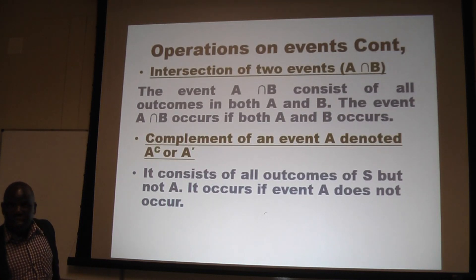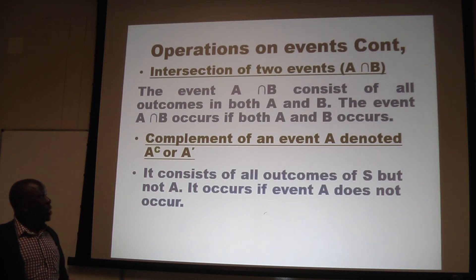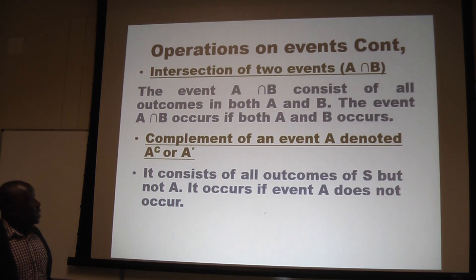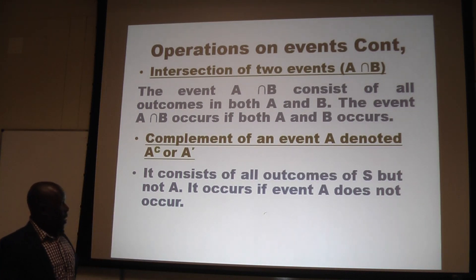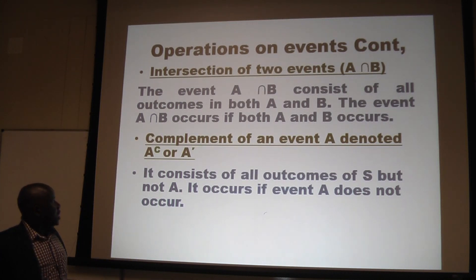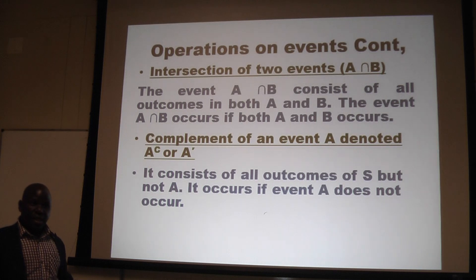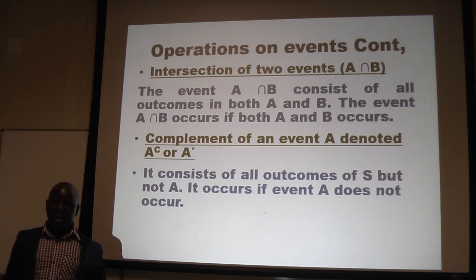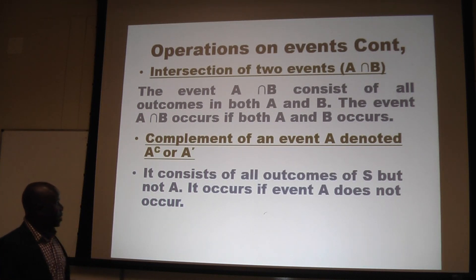What is the intersection of events? Event A intersection B consists of all elements that are both in A and B. Event A intersection B occurs if both events occur. The complement of event A — denoted A with a superscript c, or A prime — consists of all outcomes in S but not in A. In other words, it occurs if event A does not occur.